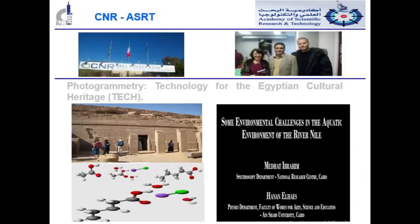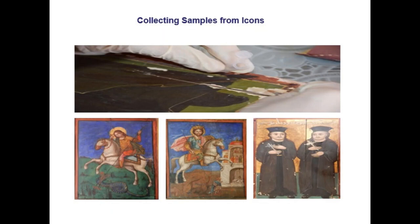We also studied photogrammetry as a technology for Egyptian cultural heritage. We applied infrared spectroscopy and molecular modeling to study the effect of organometallic interactions and the effect of salinity at and around archaeological sites in Egypt, with the help of our colleagues Giuseppina Capriotti and Andrea Angelini. This was conducted in the frame of a collaboration between the Academy of Scientific Research and Technology in Egypt and the CNR in Italy.